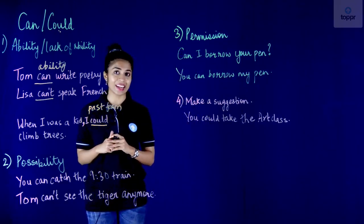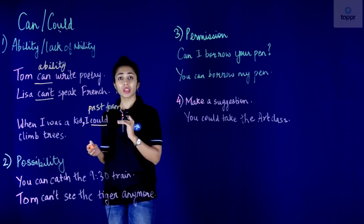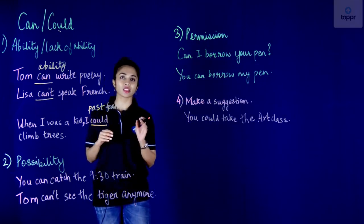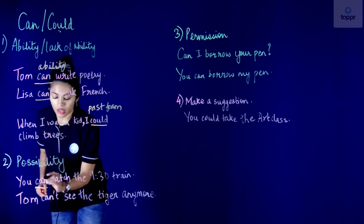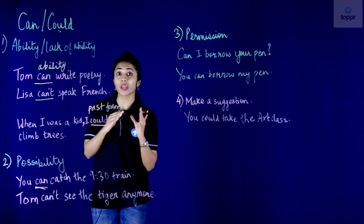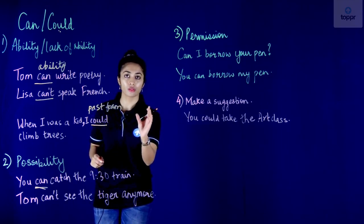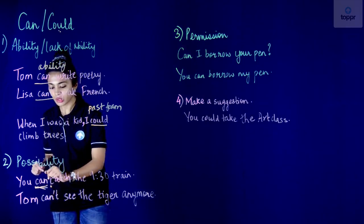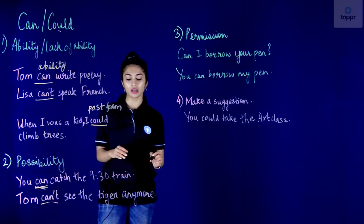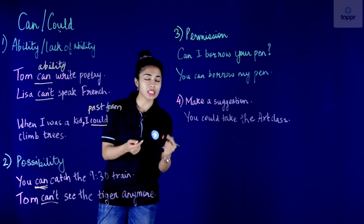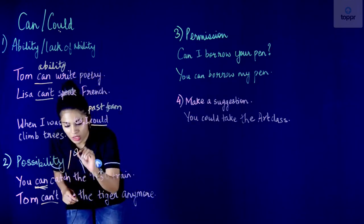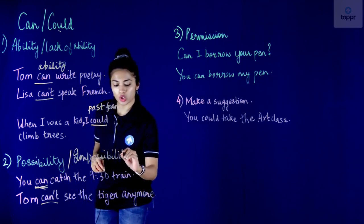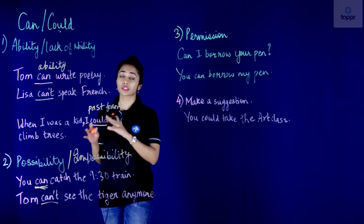The second use of can and could is to denote possibility. 'You can catch the 9:30 train' — here 'can' denotes that there is a possibility for you to catch that train. The second sentence: 'Tom can't see the tiger anymore.' Here it means it is impossible for Tom to see the tiger. So along with possibility, 'can't' also denotes impossibility of doing something.